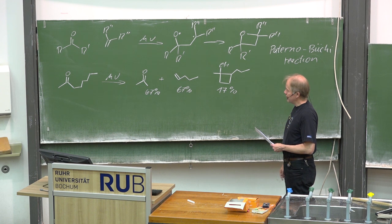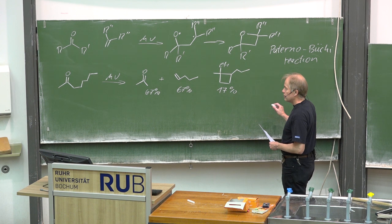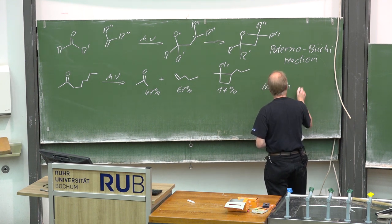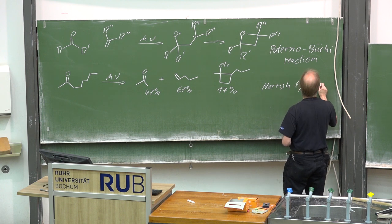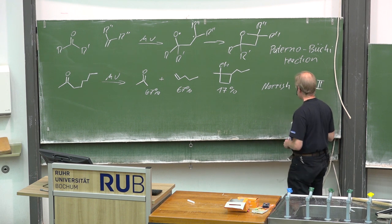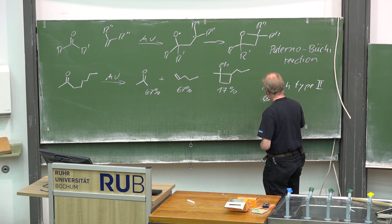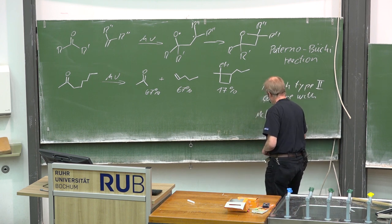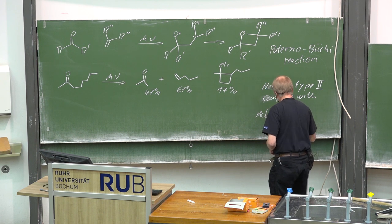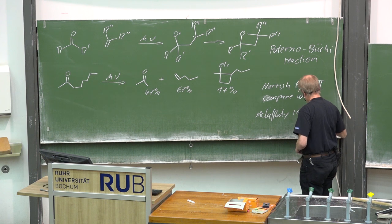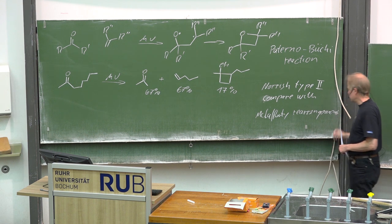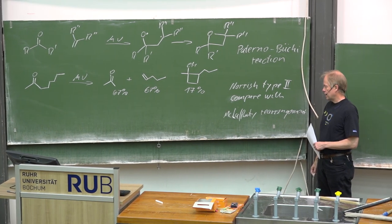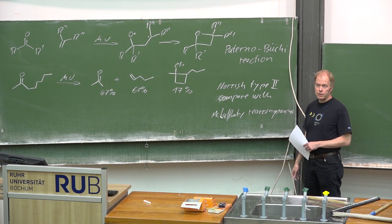By the way, as homework, just compare Norrish type 2 with the McLafferty rearrangement. The McLafferty rearrangement has been very often observed under the conditions of mass spectrometry. Make a comparison and you will find a lot of similarities.